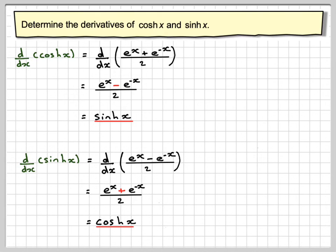Okay, so this has been a video to show you how to determine the derivatives of cosh x and sinh x. So it's really quite straightforward. If you differentiate cosh x, you get sinh x. If you differentiate sinh x, you get cosh x.